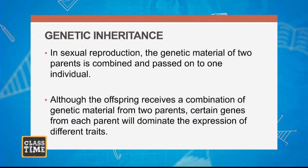Let's look at sexual reproduction. We're going to have the male and the female come together. Once the sexual act is done and fertilization takes place, we are going to have what we call an offspring being produced. In sexual reproduction, the genetic material of two parents is combined and passed on to one individual. Although the offspring receives a combination of genetic material from two parents, certain genes from each parent will dominate the expression of different traits.